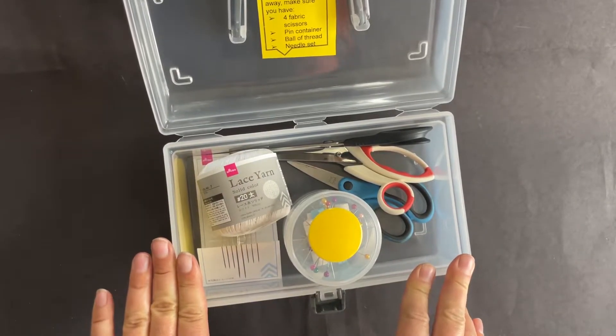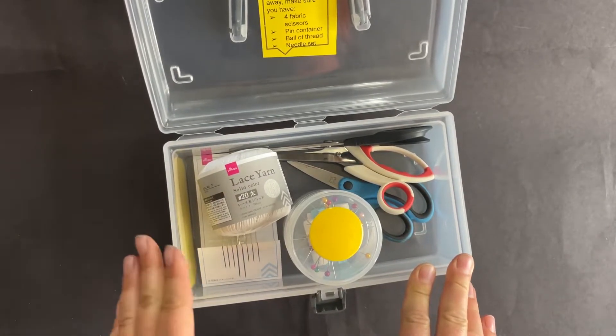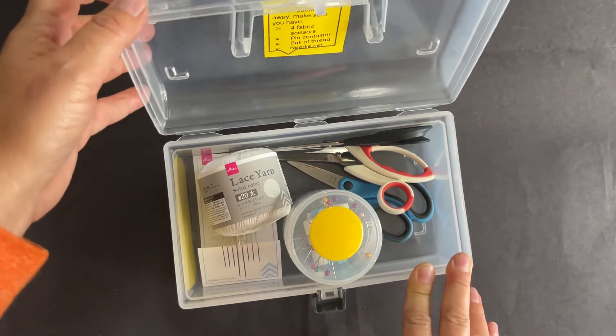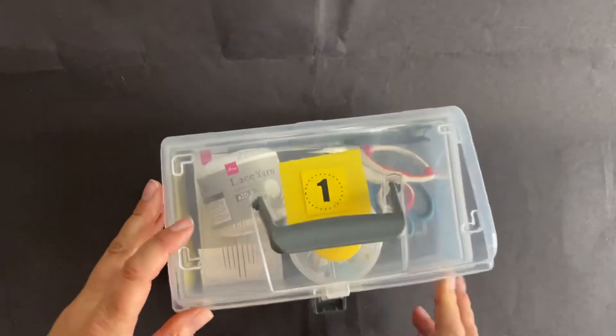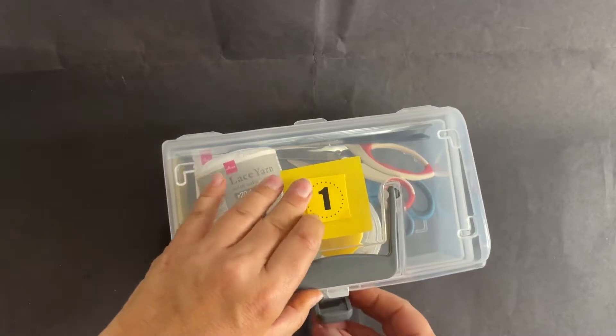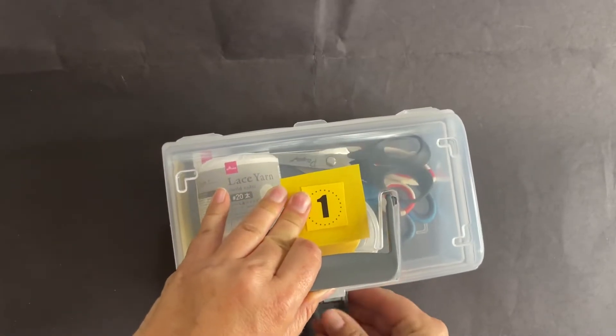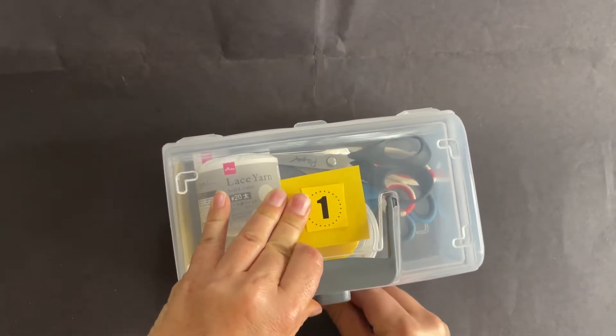When the kits are fully functioning, they will have four pairs of scissors that align with the four people that will be at the table, so everyone will have enough supplies in their kit. They can close their kit at the end, pick it up, and take it back to the teacher's cupboard.